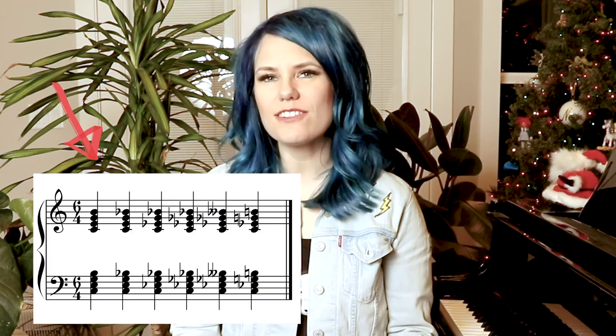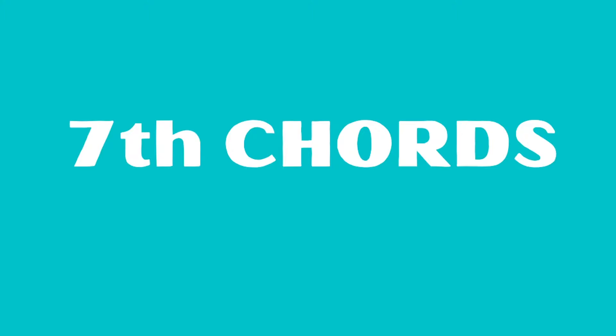The basic building block of chords within jazz are seventh chords. Now if you're a little rusty on your major, minor, diminished, and augmented triads in all keys, pause this video right now and click on the triad review video attached to the lesson. When you are solid on your triads, resume this video. We are going to start out our chord work with seventh chords.